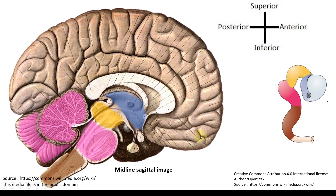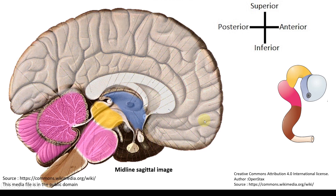This enormous part is the telencephalic vesicle — the most gigantic of all the brain vesicles. To review: myelencephalon is the medulla oblongata; metencephalon is the pons and cerebellum; mesencephalon is the midbrain; thalamus, hypothalamus, and epithalamus together form the diencephalon; and the large telencephalon comprises the cerebrum and its white matter.